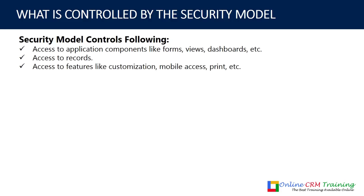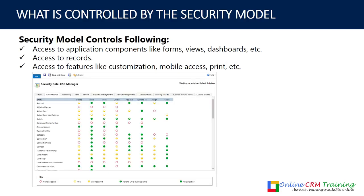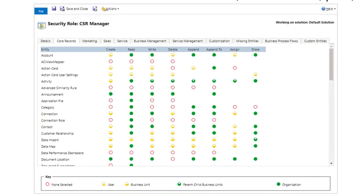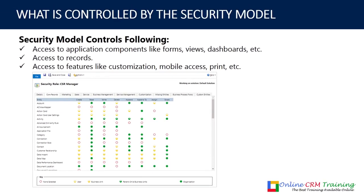Access to features like customizations, mobile access, and printing are also controlled. We'll talk about this in detail when we actually configure the security. As an example, you can see the security role for a CSR Manager — on the left-hand side you have all the entities, and on the right-hand side you have what operations a user can perform at which level. In the coming video I'm going to explain exactly how you can control Dynamics 365 security using security roles. That's it for this video and I will see you in the next tutorial.